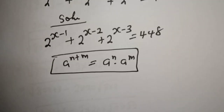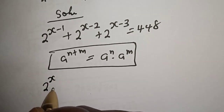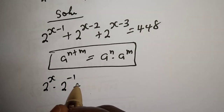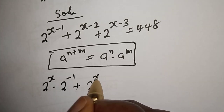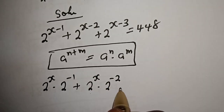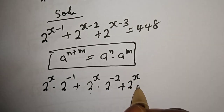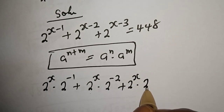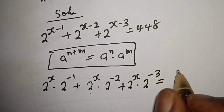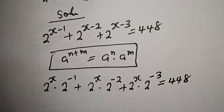All of this can be written as 2 raised to power x multiplied by 2 raised to power minus 1, plus 2 raised to power x multiplied by 2 raised to power minus 2, plus 2 raised to power x multiplied by 2 raised to power minus 3, is equal to 448.